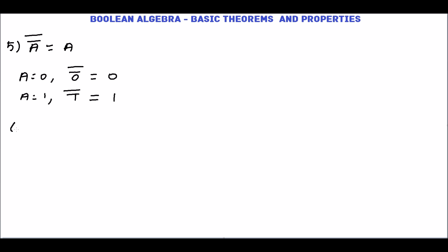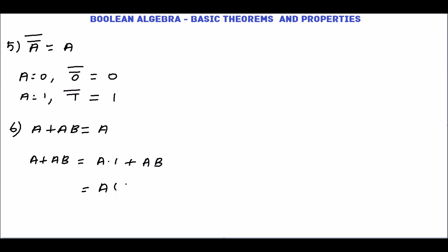The next theorem is a + ab = a. Taking the left-hand side, a + ab, we can write a as a · 1, so we have a · 1 + ab. Since both terms have a, we factor out: a · (1 + b). Since 1 + b = 1, we get a · 1 = a.